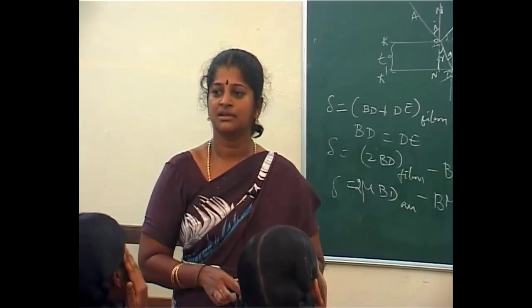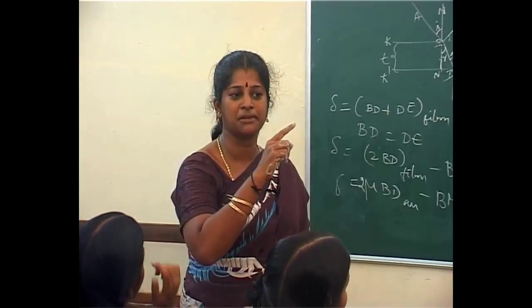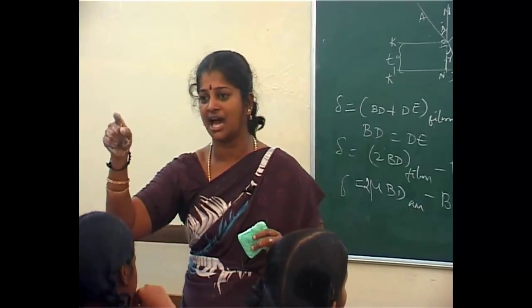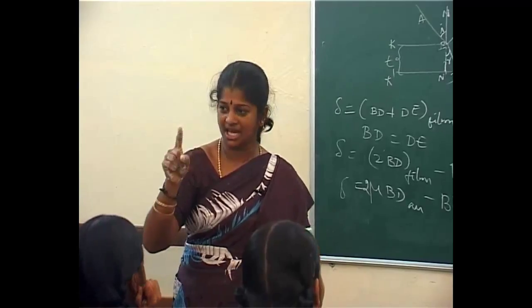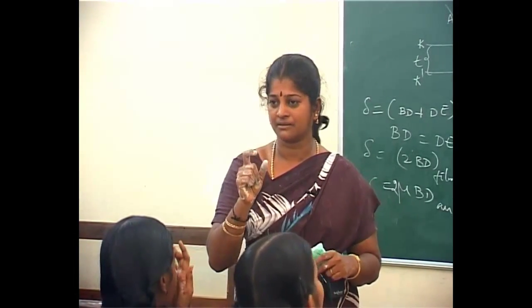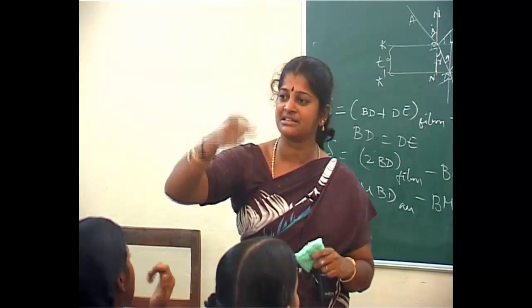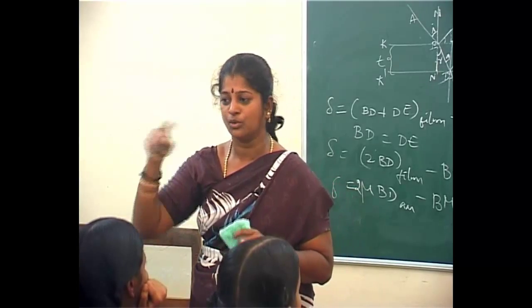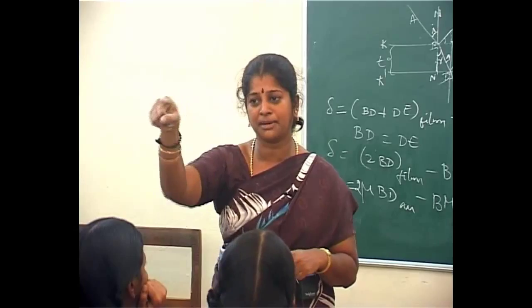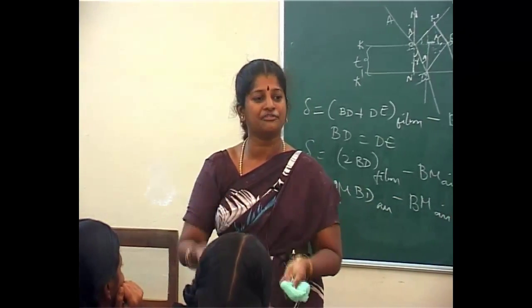This is an important, very important 10-mark question. In interference of thin films, the condition for brightness is (2N − 1)λ/2 and the condition for darkness applied to the central point is different from Young's double slit because the central ring in thin film interference is dark.